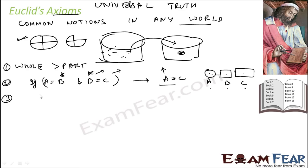Another axiom says that if equals are added to equals, the wholes are equal. For example, if a is equal to a — both sides — if you add b, then a plus b will be equal to a plus b. So if equals are added to equals, the results are also equal.